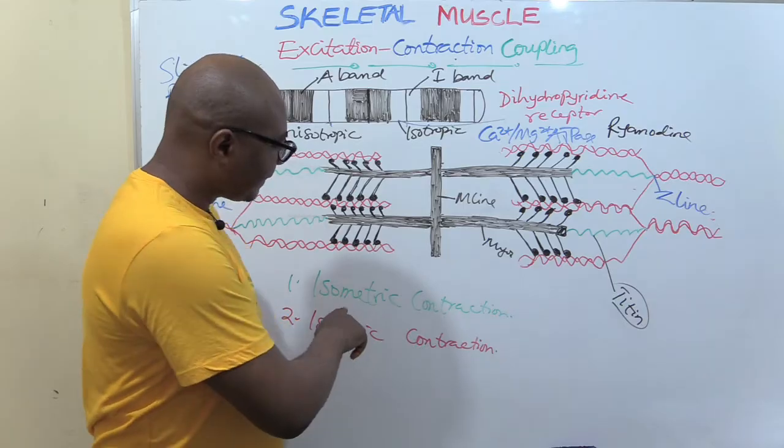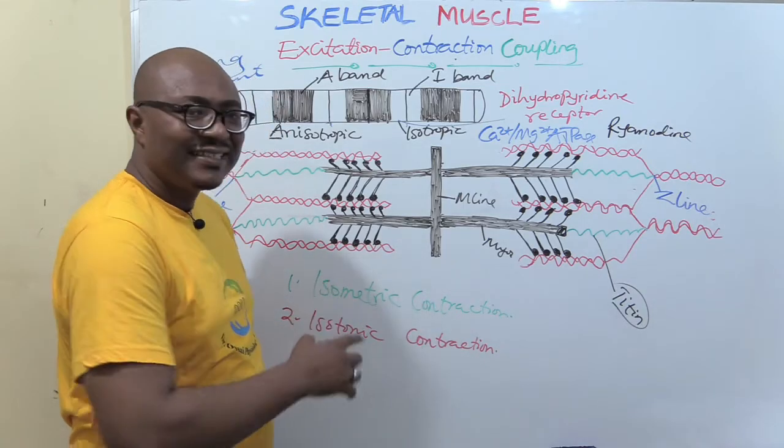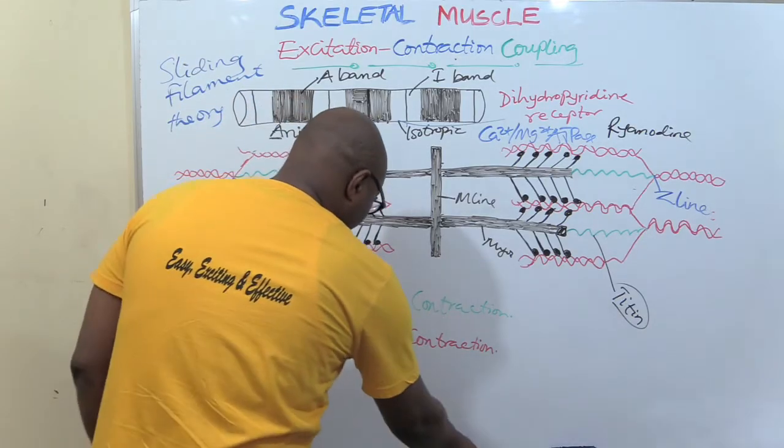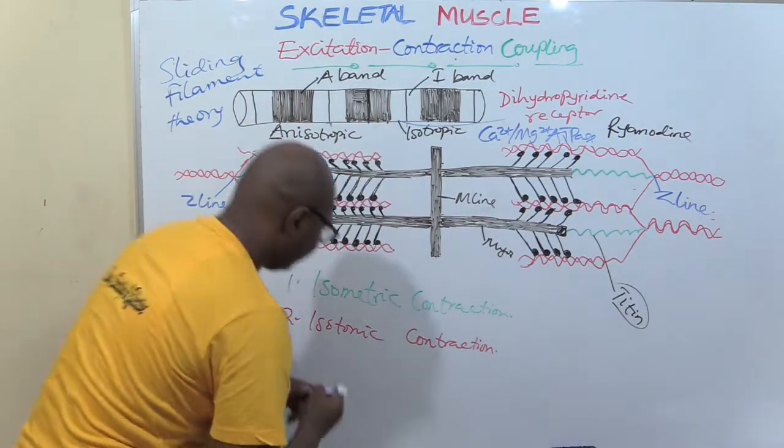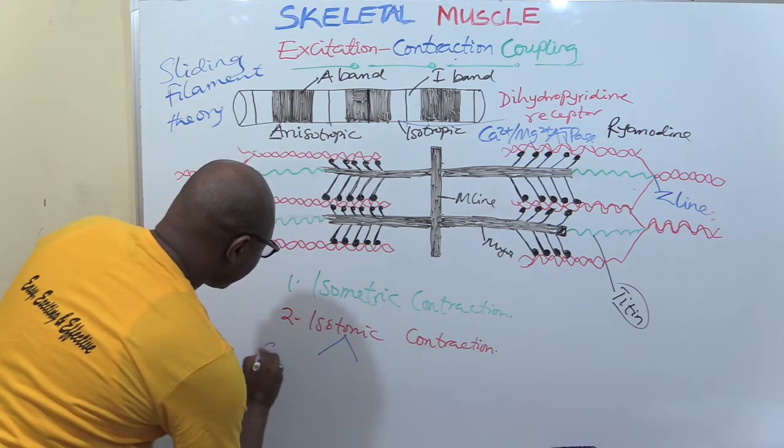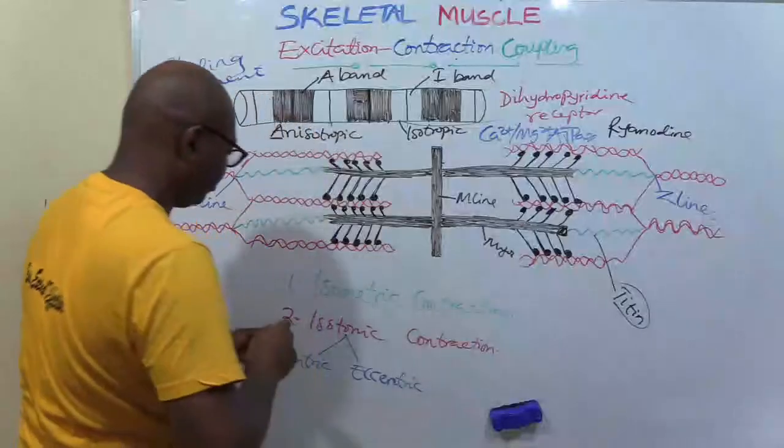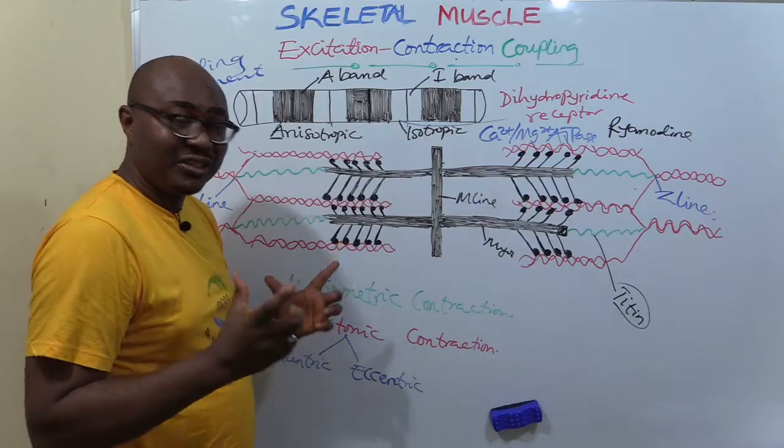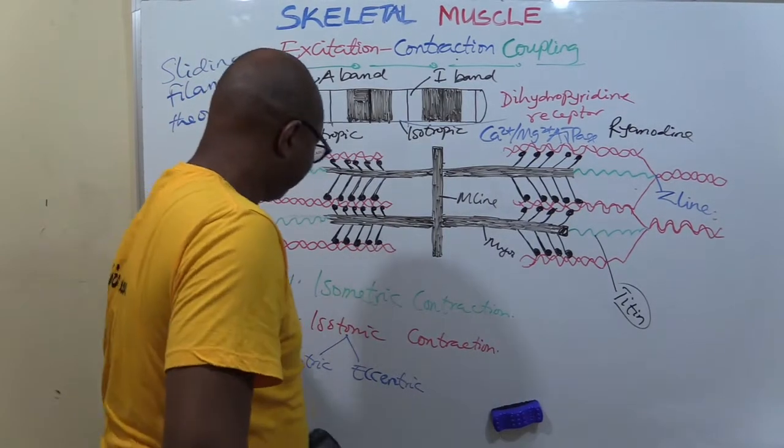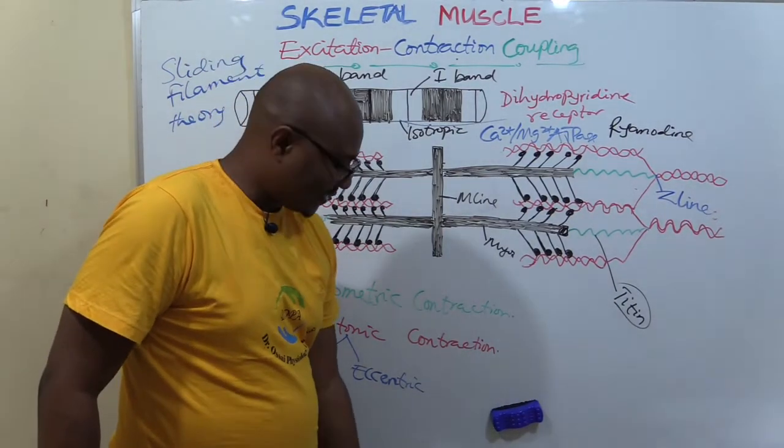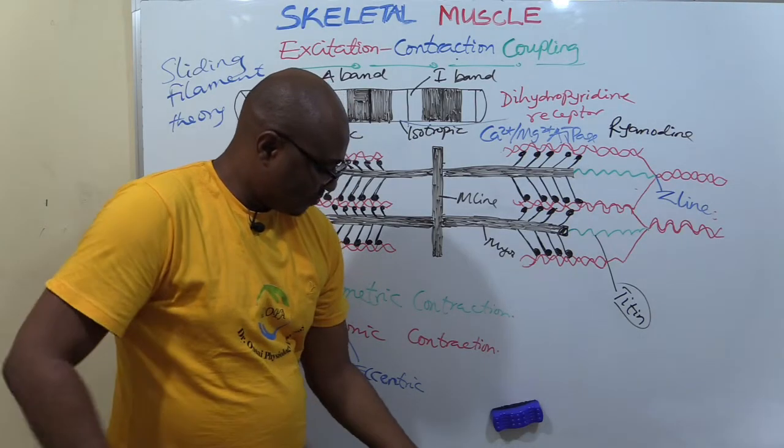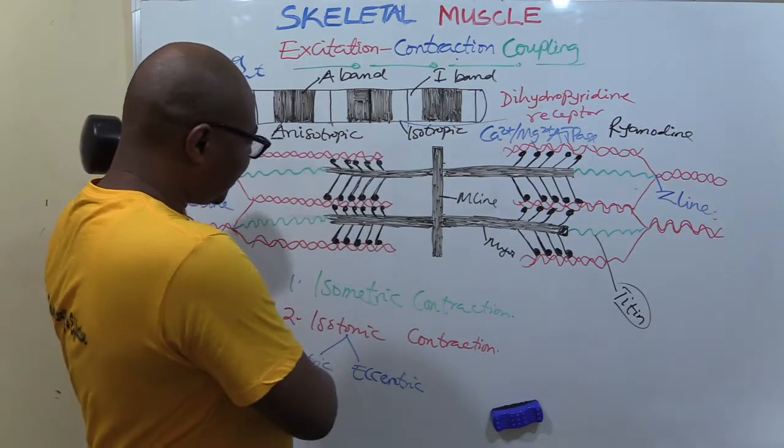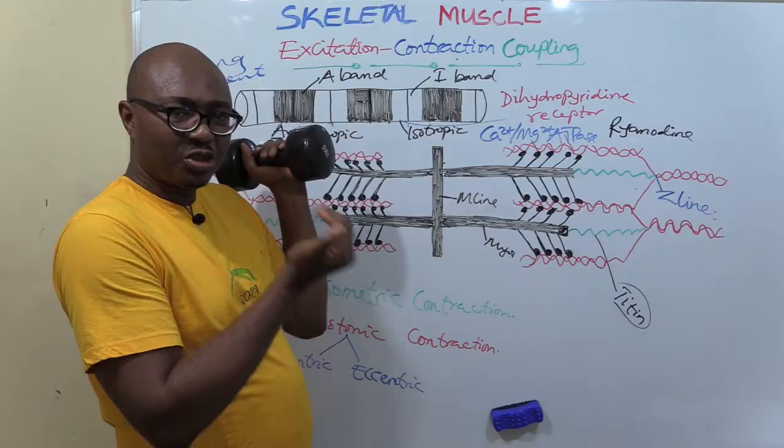Then isotonic is what? There's change of length. Isotonic is divided into two. You can have concentric. Let me demonstrate the two for you now. Concentric. Look at this dumbbell now. My bicep. I'm raising it up. My bicep is shortening. So concentric is the shortening. It's a shortening contraction.